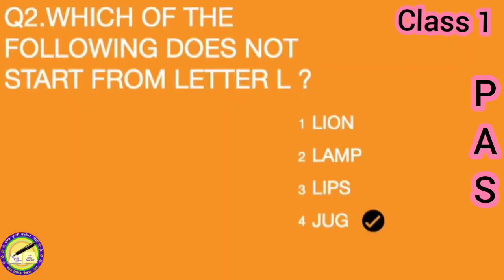Second question is: which of the following does not start from letter L? The words are lion, lamb, lips, and jug. Lion, lamb, lips start with the letter L. Jug does not start with L. So you will put a tick on the fourth option, jug.